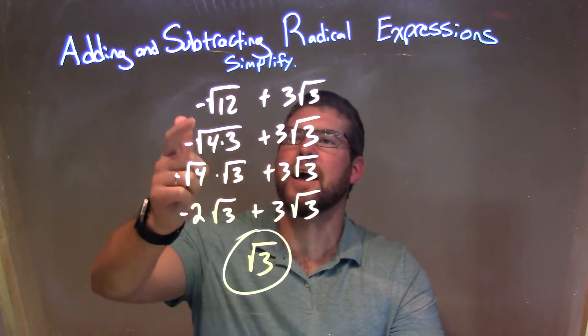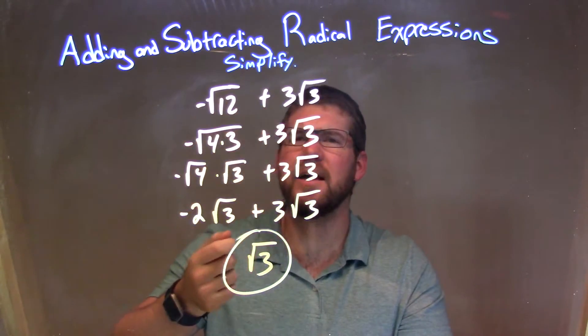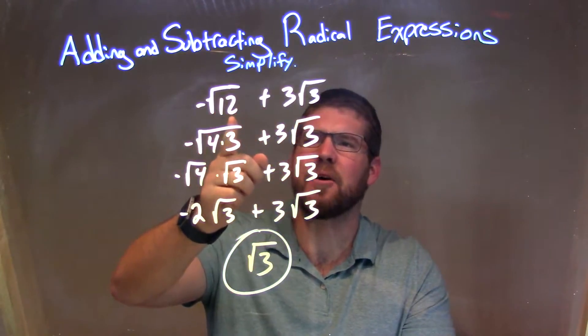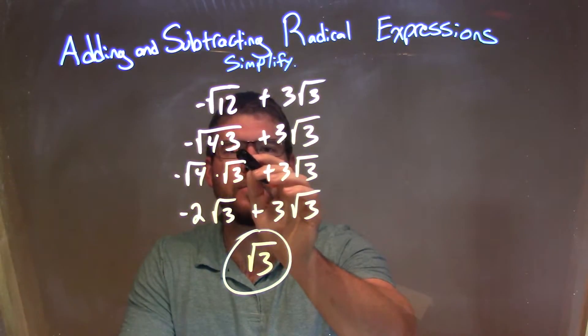So let's recap. We're given negative square root of 12 plus 3 square root of 3. We then want to see how can we have both of these be square root of 3. Well, 12 is 4 times 3, so I wrote 12 would be 4 times 3.